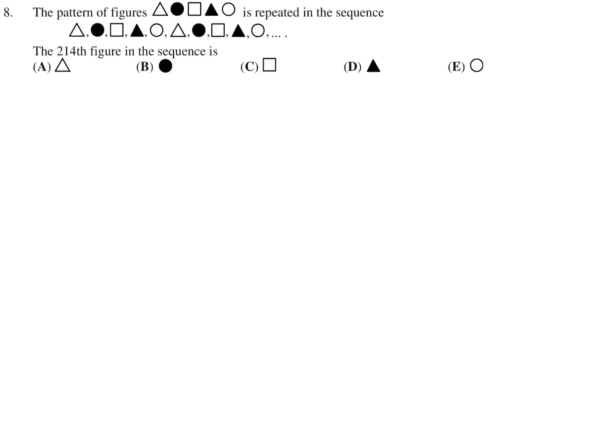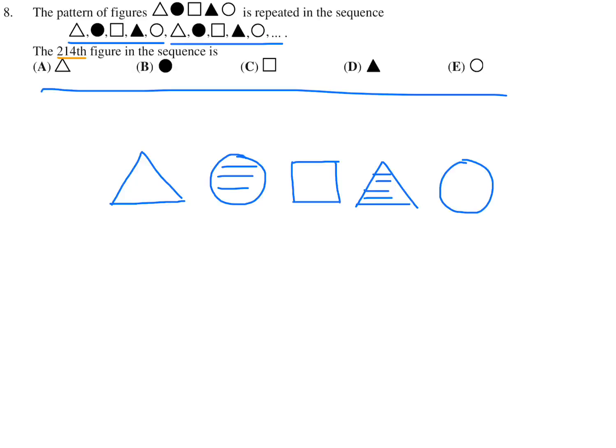The pattern of figures is repeated in a sequence. The 214th figure in the sequence is. So they've got these shapes. You've got a triangle followed by a filled-in circle with a square, a filled-in triangle, and an empty circle. And it looks like it just repeats like that. They want you to find out in the 214th position in the sequence which one of these shapes is it. Well, we can write out all 214, but I think it's easier to recognize that this is the first, this is the second, third, fourth, and fifth.